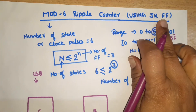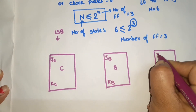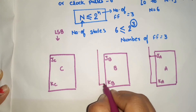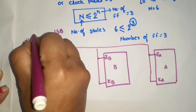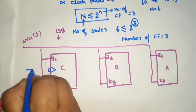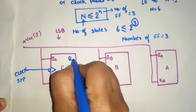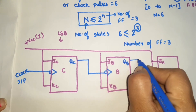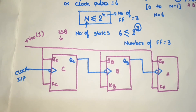Since we are using JK flip-flops, the inputs are JC, KC, JB, KB, JA, and KA. In an asynchronous (ripple) counter, all J and K inputs are connected to logic high (VCC). The input clock pulse is applied at the first flip-flop, the output QC acts as the clock for the second flip-flop, and QB acts as the clock input for the third.